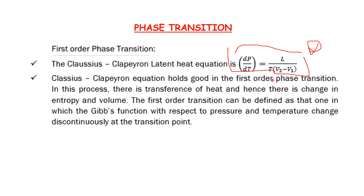In the first order phase transition process, there is transference of heat and hence there is a change in entropy and volume. Entropy and volume undergo a first order change. The Gibbs function changes continuously with respect to pressure and temperature at the transition point. This defines the first order phase transition.